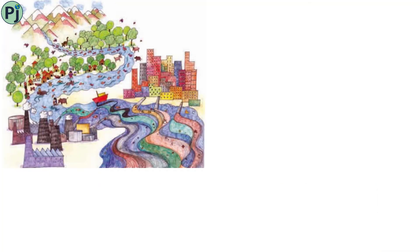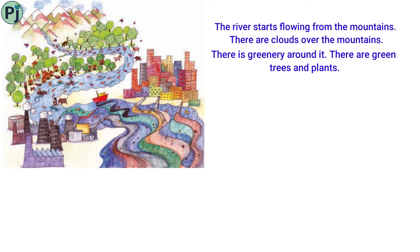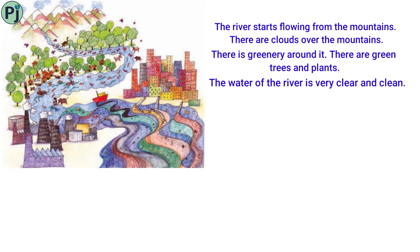So students, first of all, the river starts flowing from the mountains. There are clouds over the mountains. Here you have mountains and aquatic plants in the river.